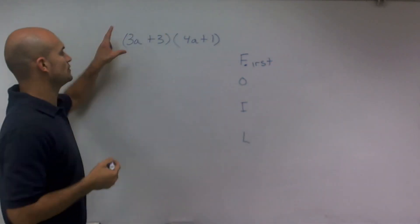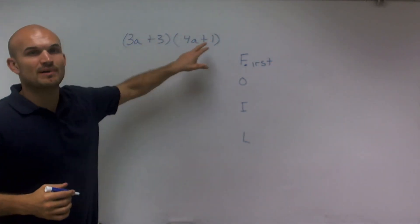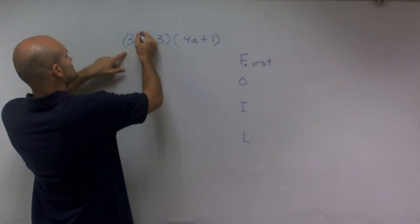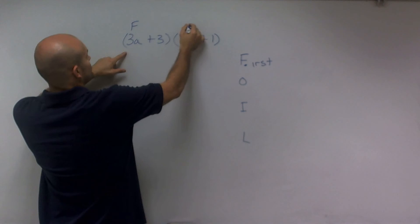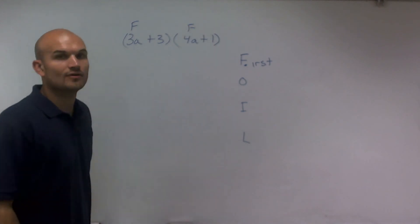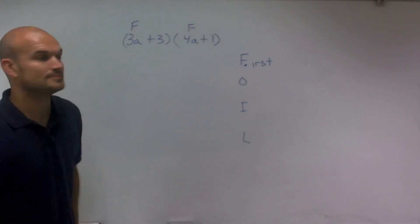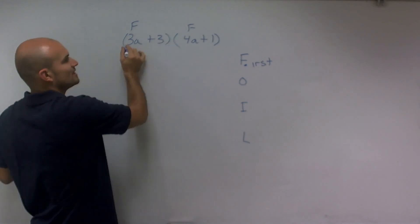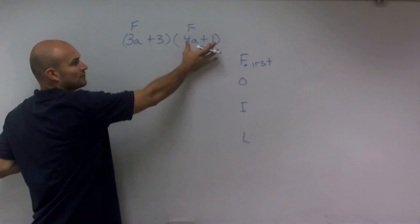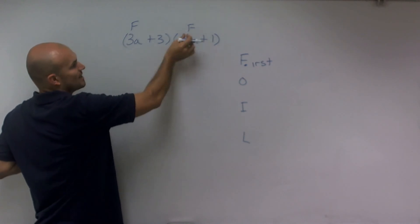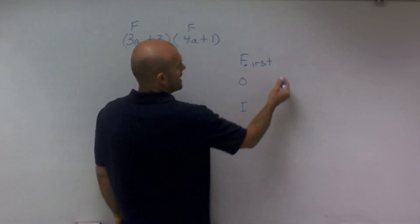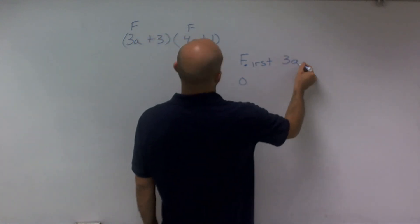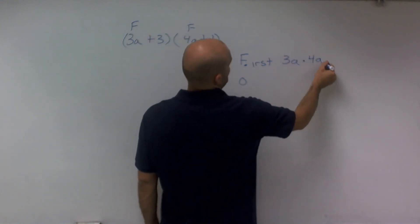F stands for the first. So what I'm going to do is I'm going to look at this binomial times a binomial and say, what is the first going to represent? Well, the first represents my first two terms of each binomial. So therefore, the first term, if you're going to read this from left to right, of this binomial is 3a. As I read this binomial, the first term reading from left to right is 4a. So what I have is 3a times 4a.